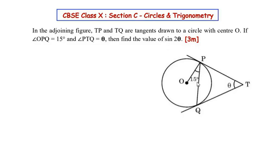Let us understand the question first. We have been given a circle with center O, and there are two tangents touching the circle at point P and point Q from an external point T. We have been given angle OPQ as 15 degrees and angle PTQ, which the tangents make with the external point T, as theta. We need to find the value of sin 2theta. This question is a combination of circles and trigonometry.